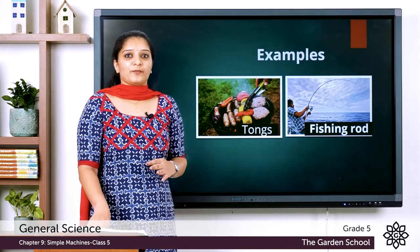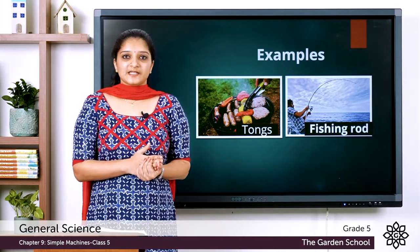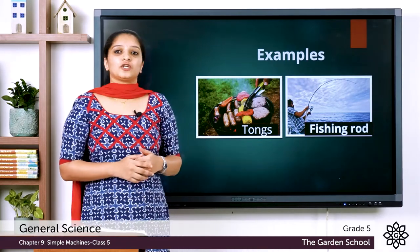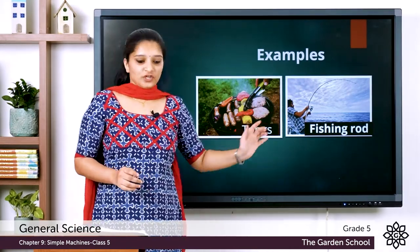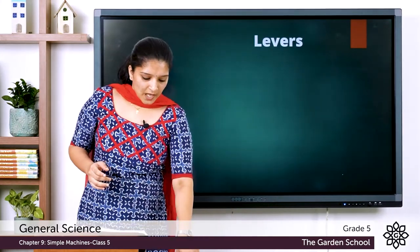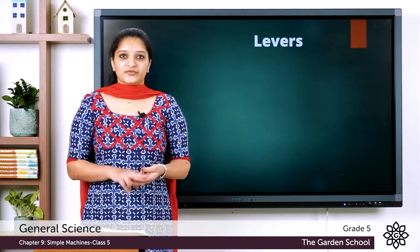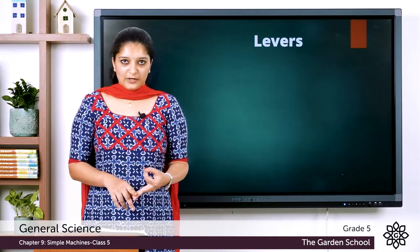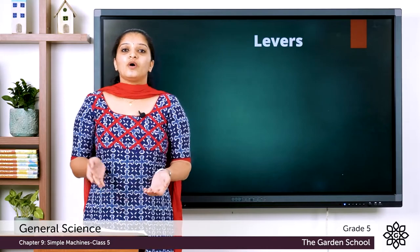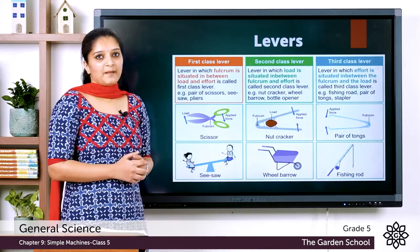The bent part of the tong is considered as the fulcrum. As you know, the fulcrum is the point at which the lever pivots or rotates. So the third class lever is a type of lever in which the effort lies at the center, keeping the fulcrum and load at its two ends, and the examples include tongs and fishing rod. Now let's compare all types of levers.